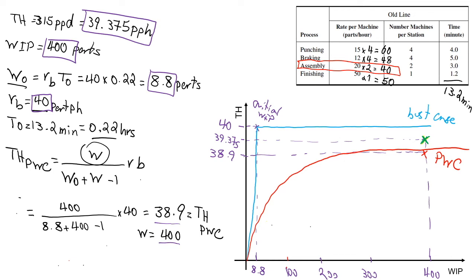Recalling the plot structure, there is a good region and a bad region. The current situation of the old line is located within the good region, so we can say the old line is performing well. However, we also need to perform the same calculations for the new line to see how it is performing.